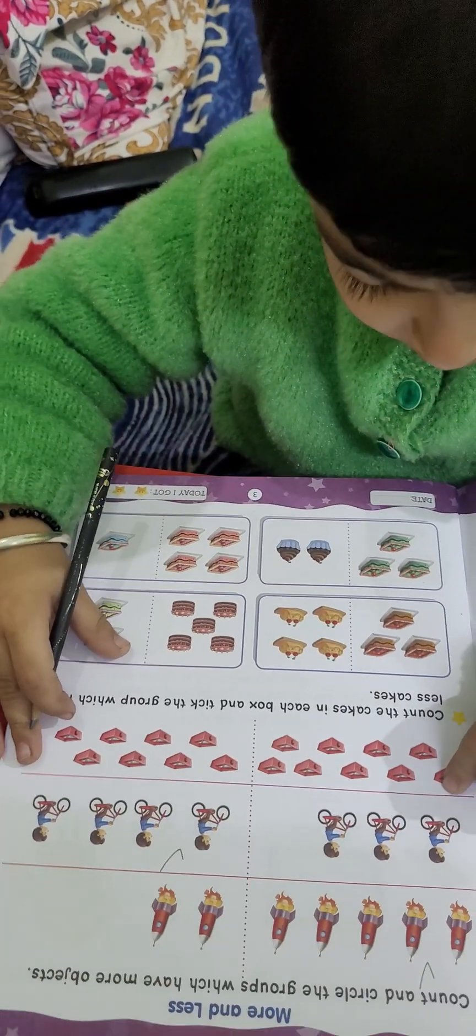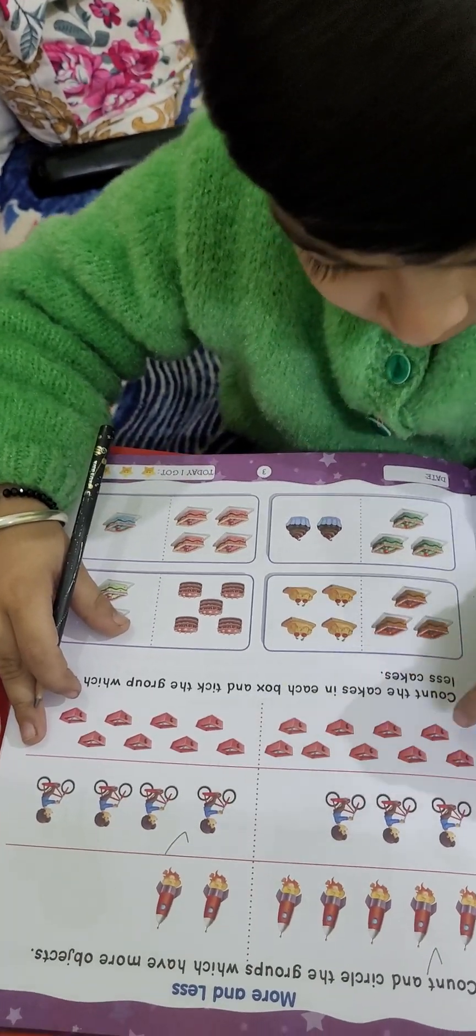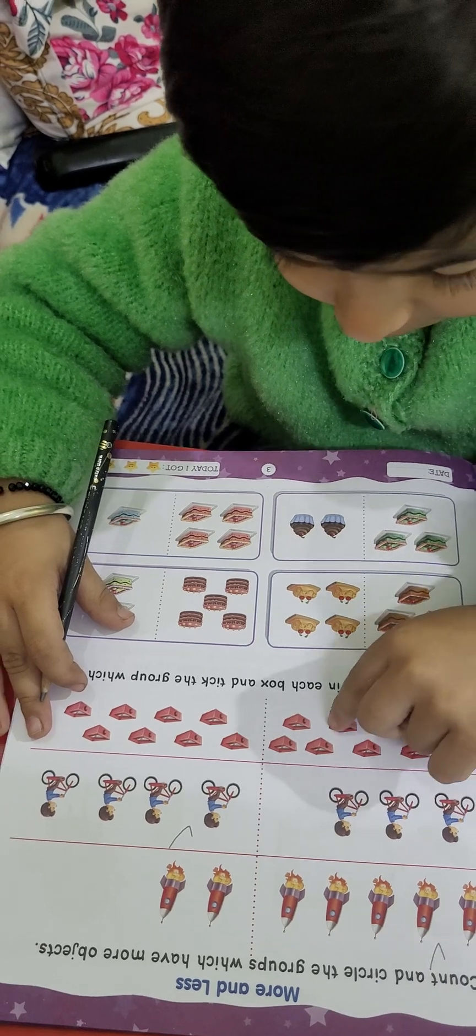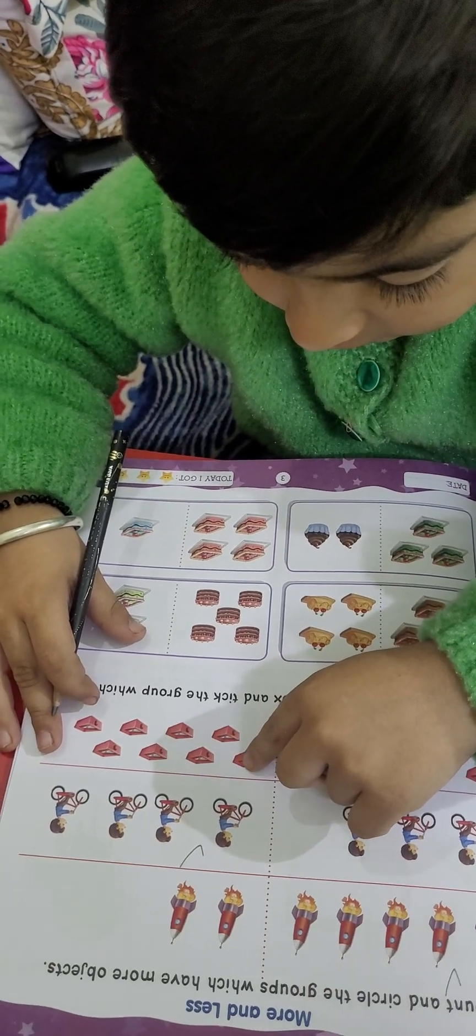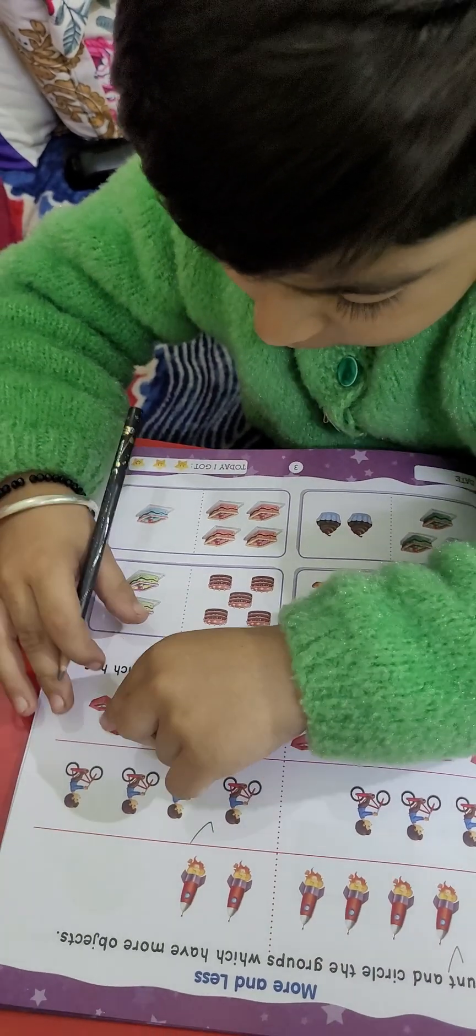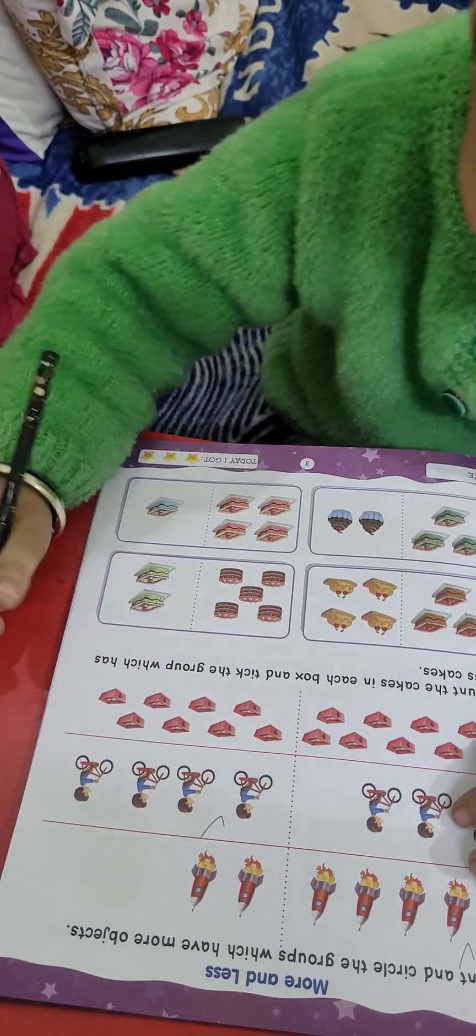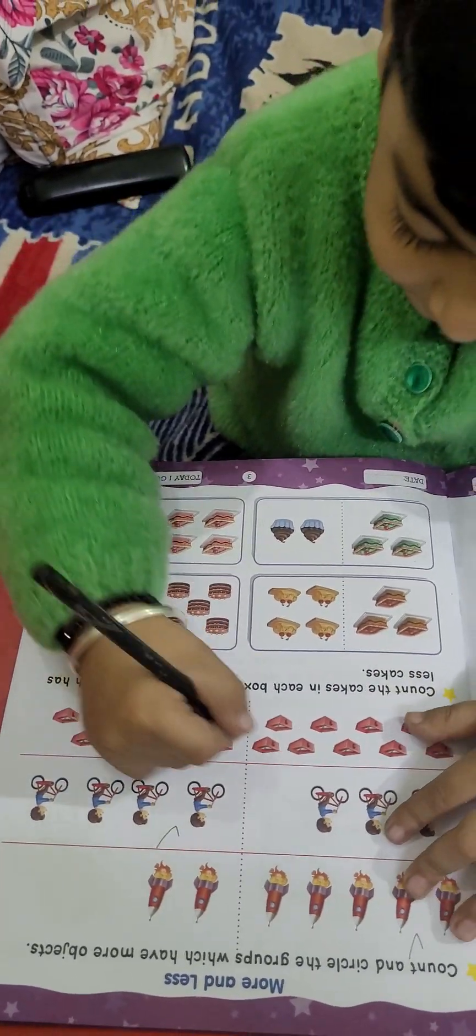Now, check in this. 1, 2, 3, 4, 5, 6, 7, 8, 9, 10. 1. 1, 2, 3, 4, 5, 6, 7, 8. Which one is more? Very nice. Tick.